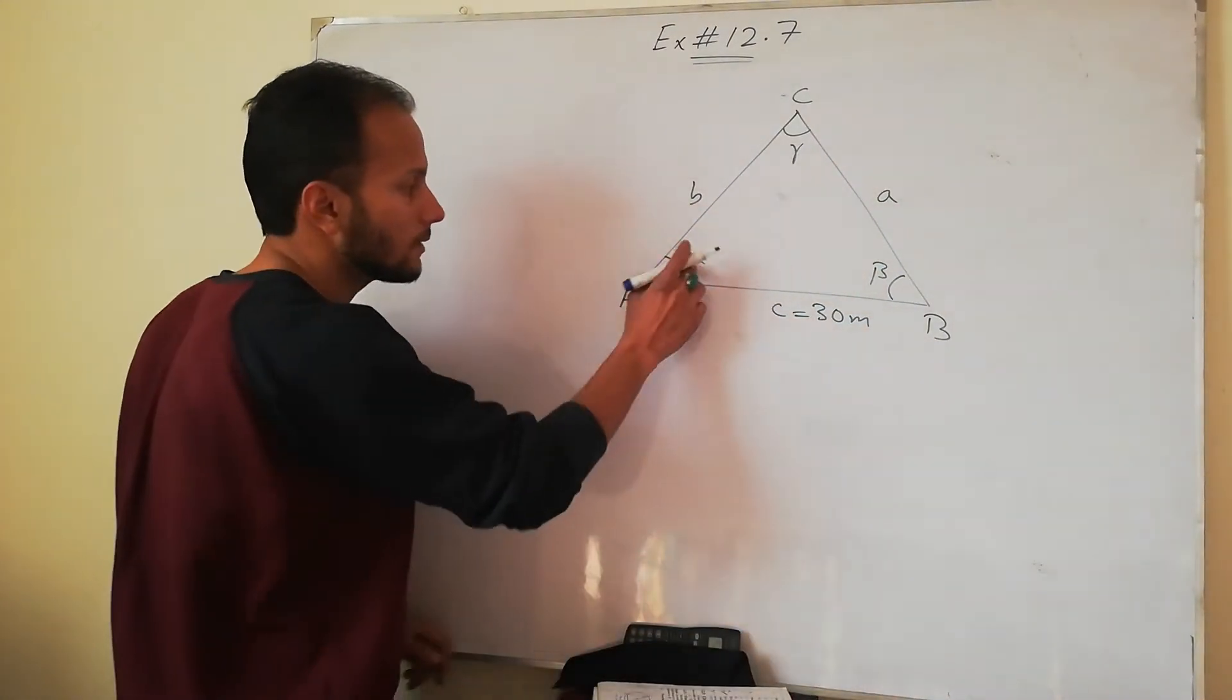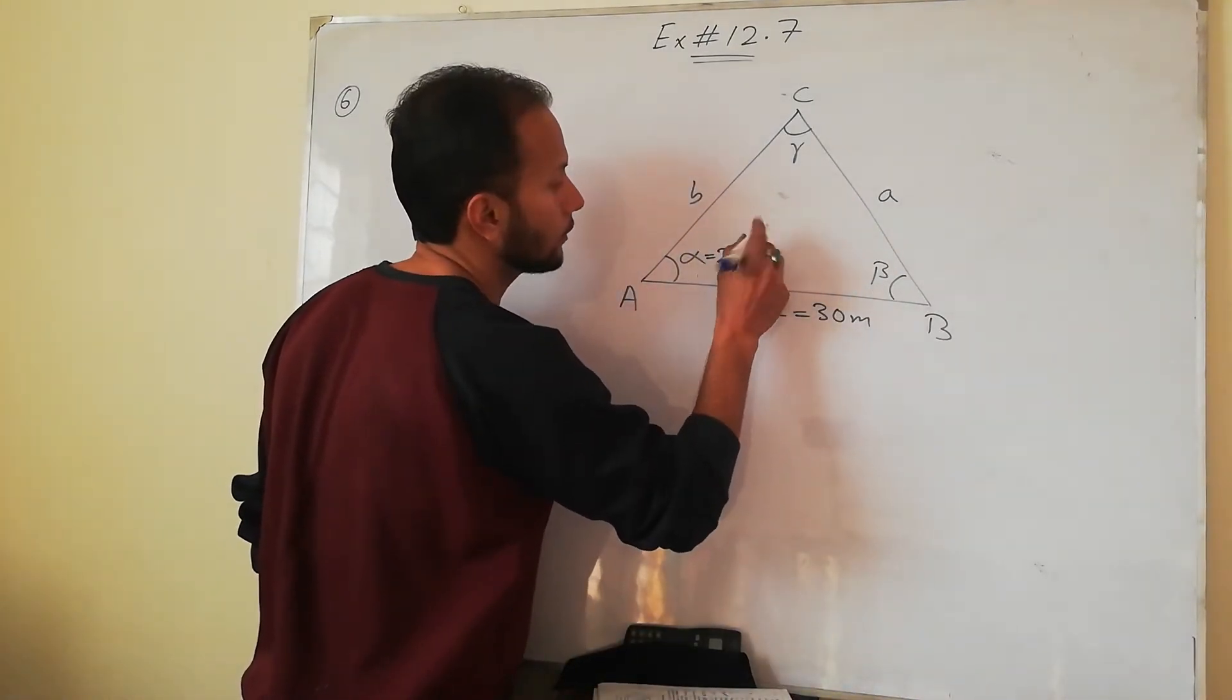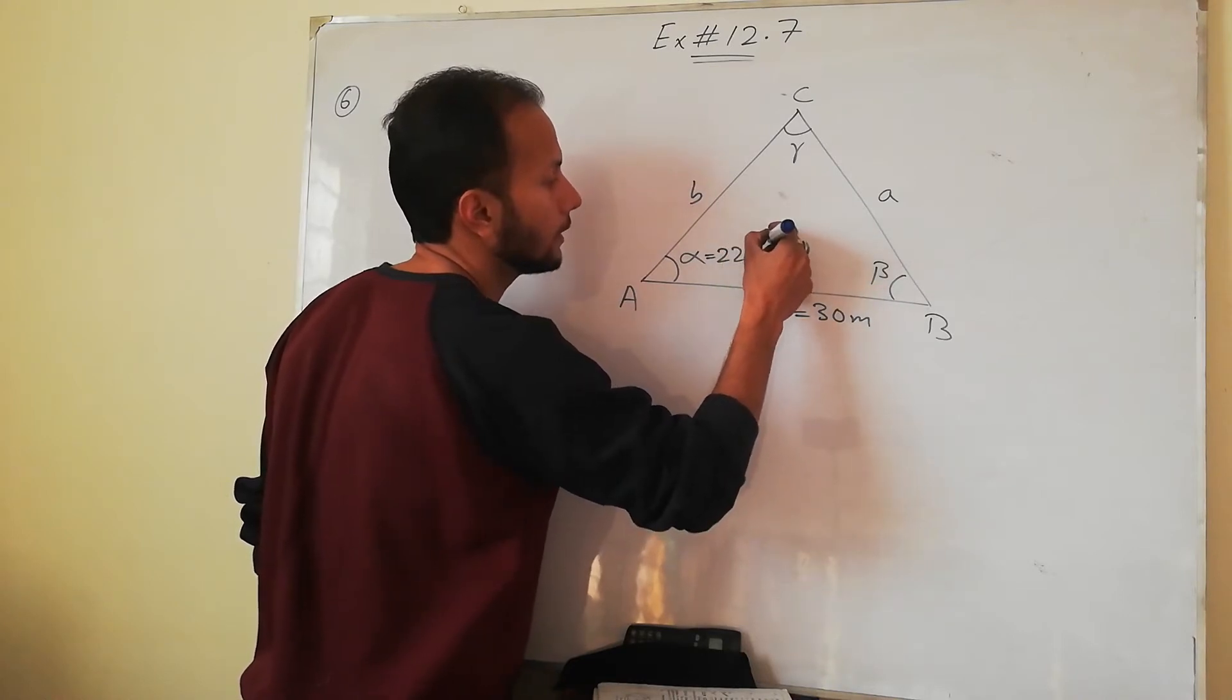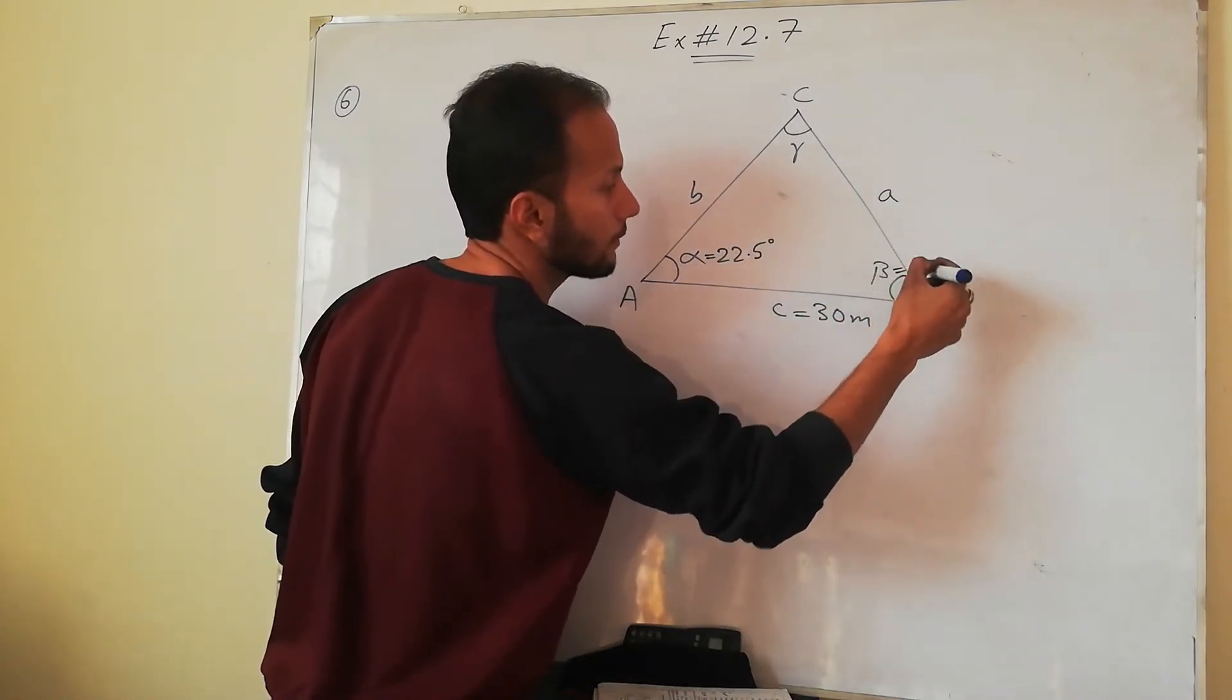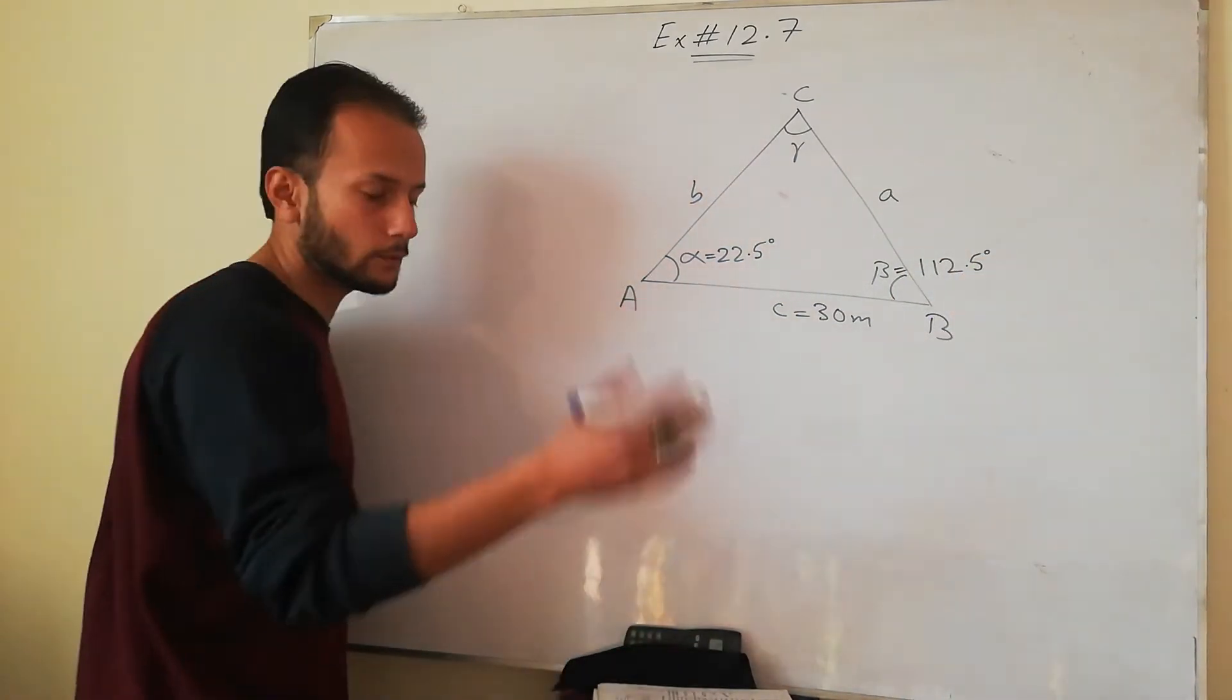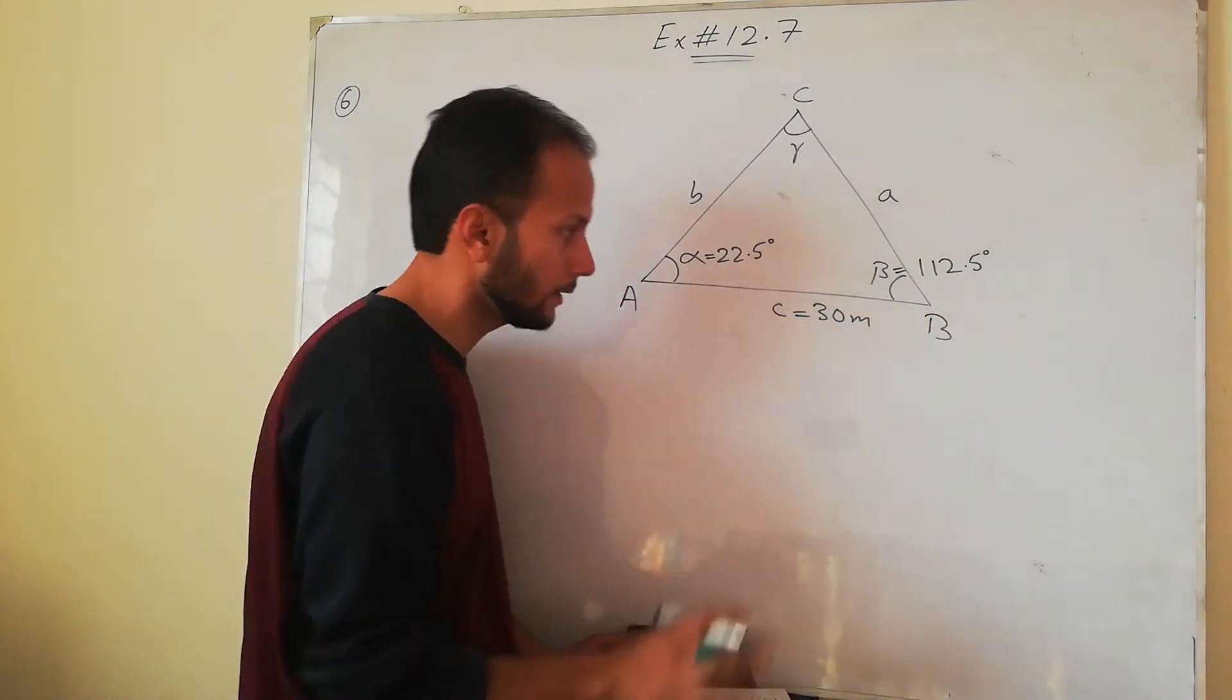Find the cost of it. So if corners are given, I will make alpha 22.5 degrees. And the beta which we have given is 112.5 degrees. It says find the cost of the planting. These are two corners.